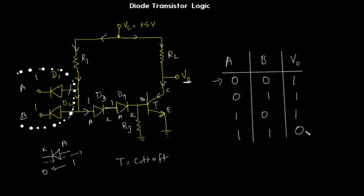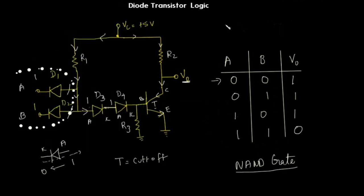This resembles the truth table of a NAND gate. So this is how you create a NAND gate from diode transistor logic. In the next video we will design a circuit with resistor transistor logic. If you have any doubts, please put them in the comment section — thanks for watching.